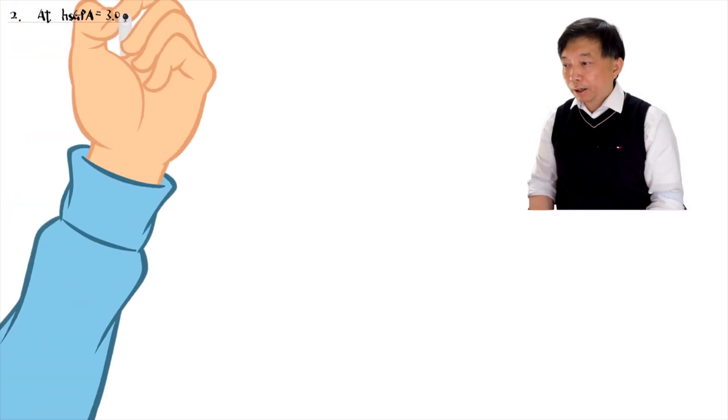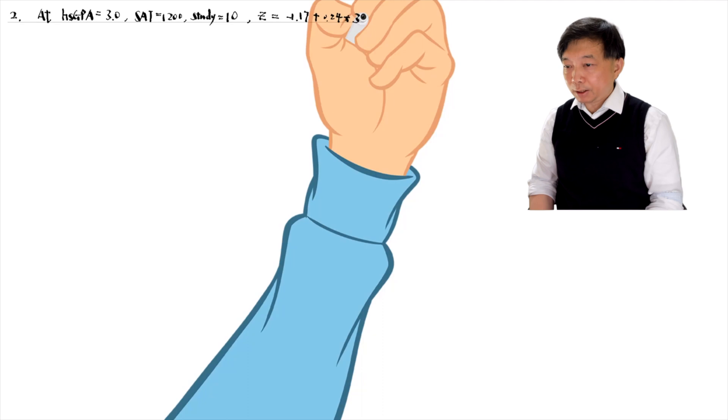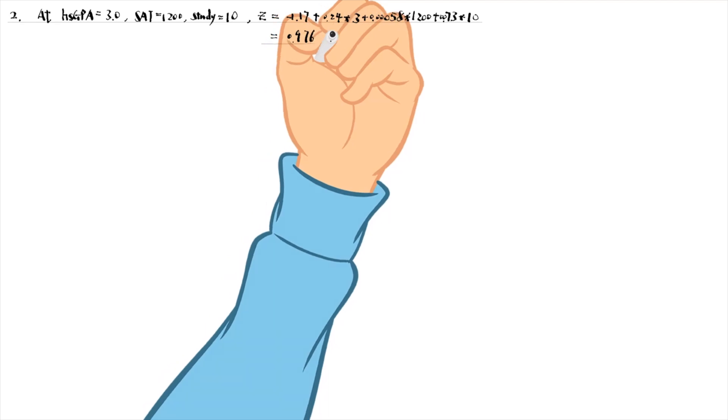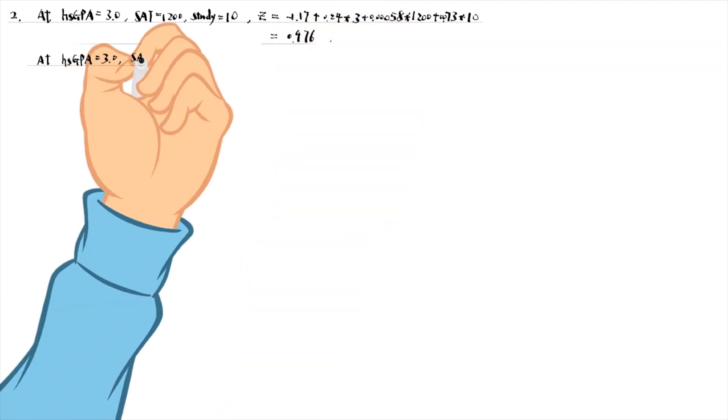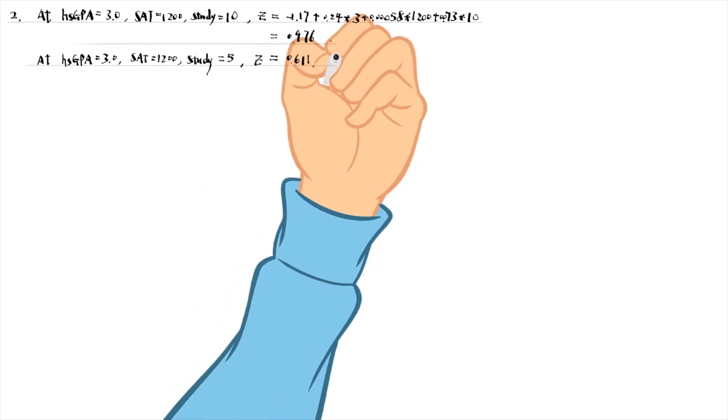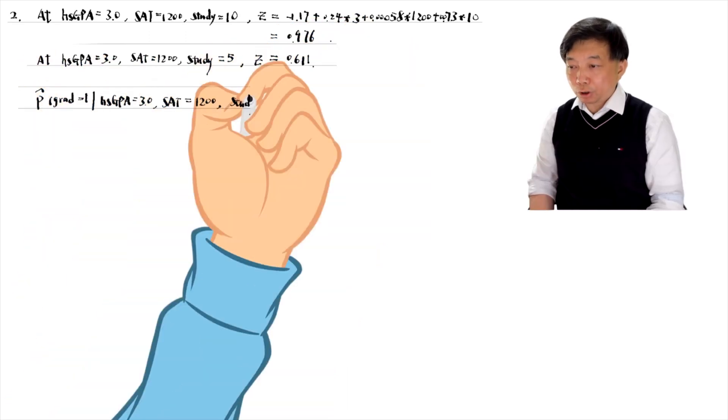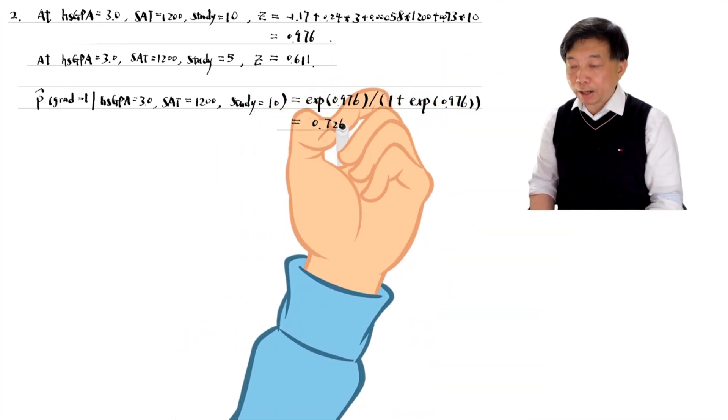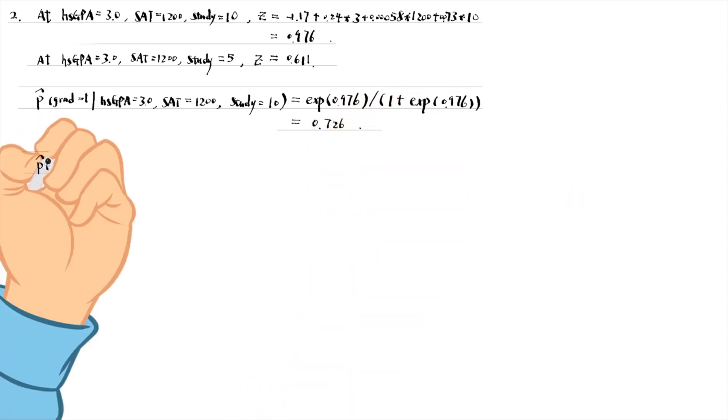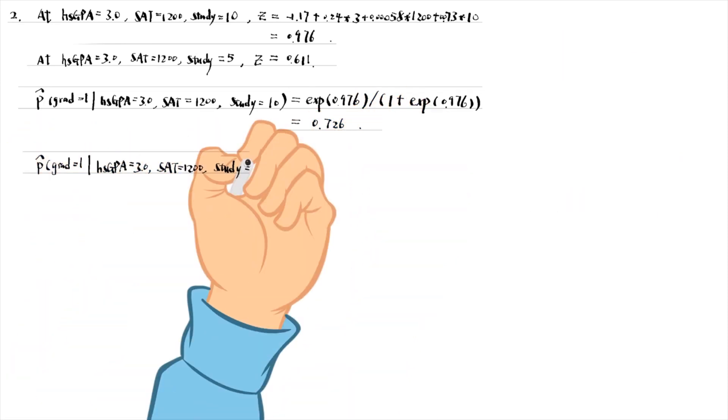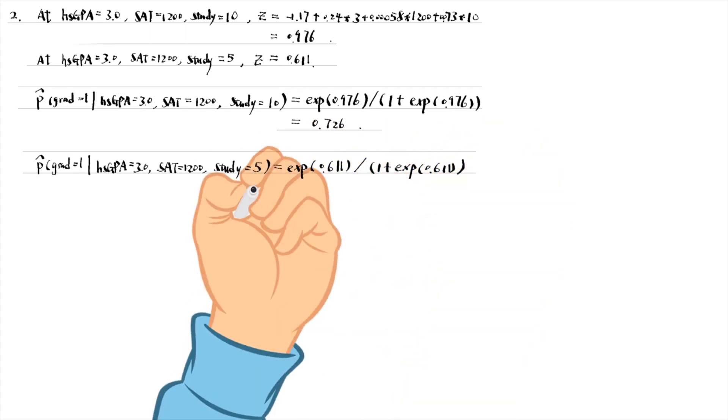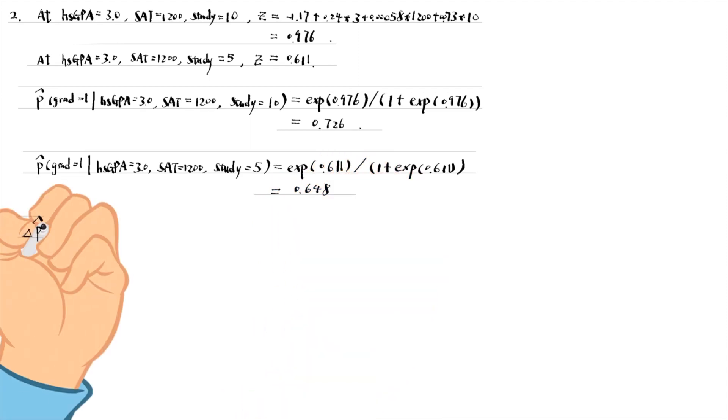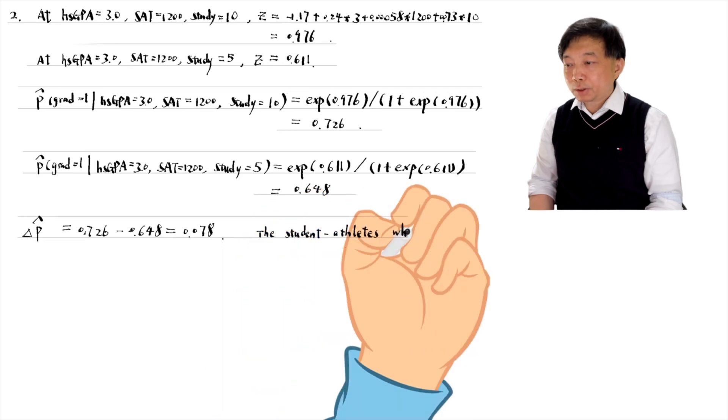First, we can calculate the latent variable z in each situation. Then using the logistic function, we can compute the probabilities of graduation for the two different groups of student athletes. The difference between them is 0.078.